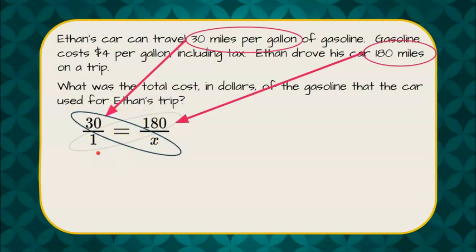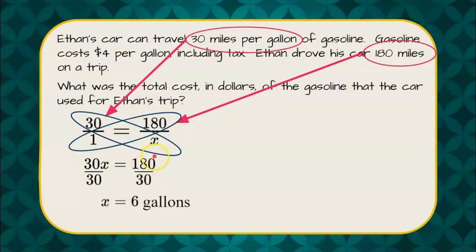We're going to use cross-product property. 30 times X is equal to 1 times 180. We're going to solve for X by dividing both sides by 30. X is equal to 180 divided by 30.